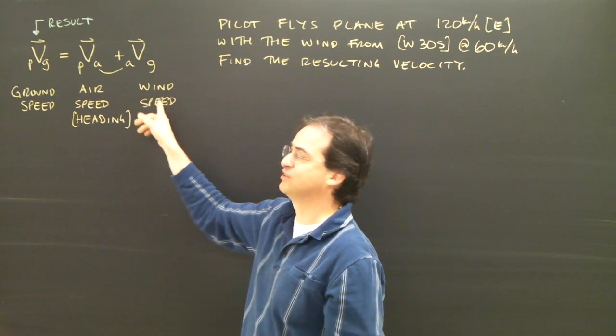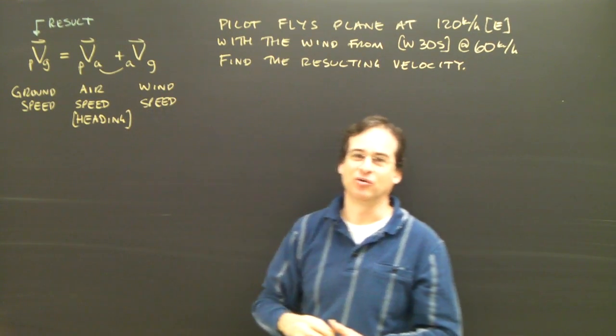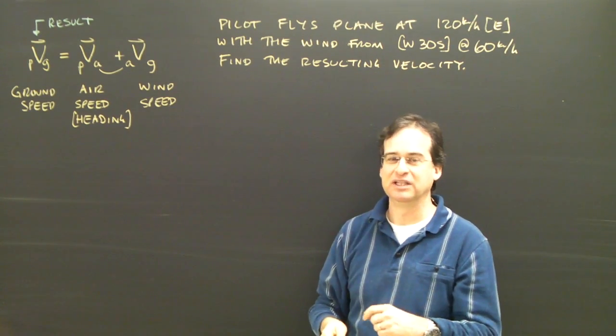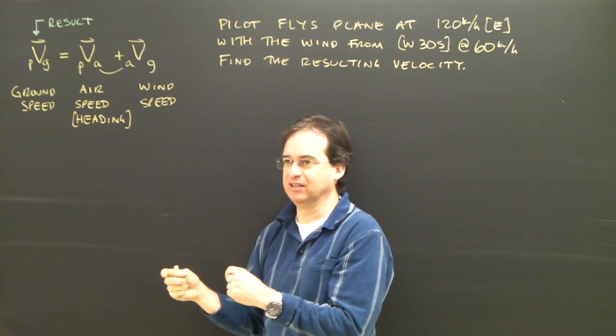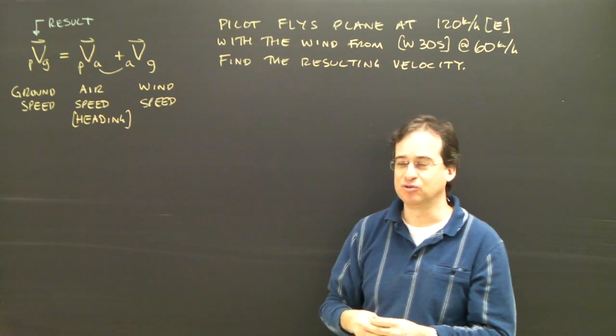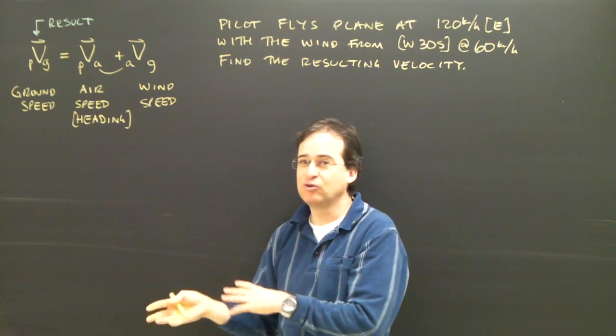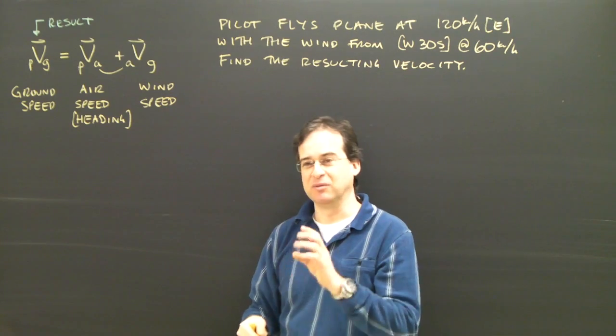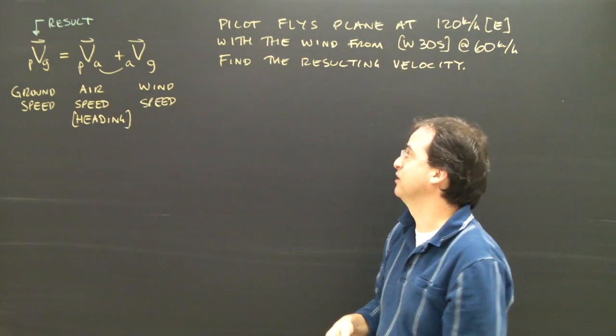As far as the wind, we call this the wind speed. And the words to notice are from and to. If I say the wind is from the west, then it's traveling east. So you should say the wind is east. If I say the wind is to the west, then the wind is west. So make sure you look at how that is explained in the question.